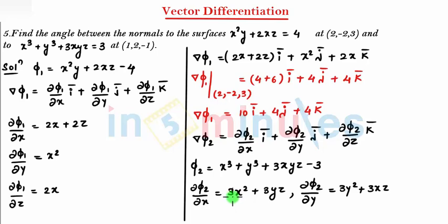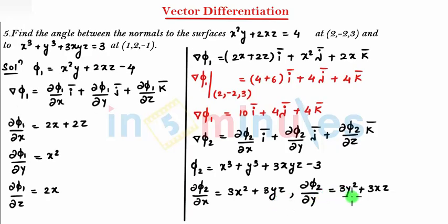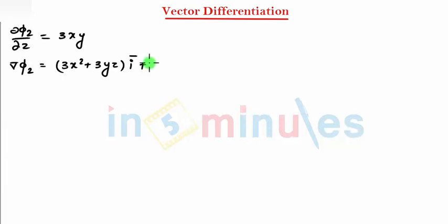First is 3x² + 3yz into î, the next is 3y² + 3xz ĵ, and the last is 3xy k̂.